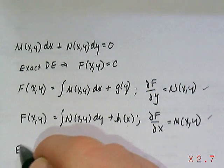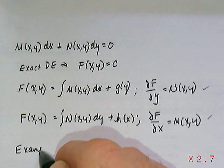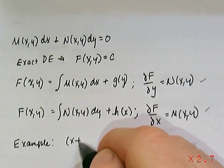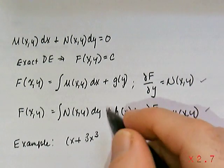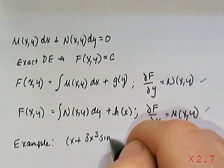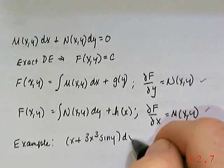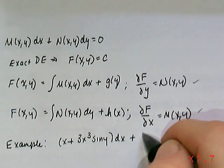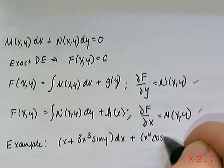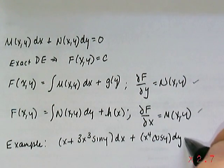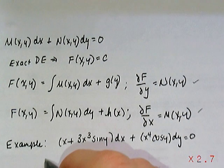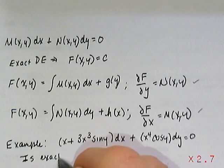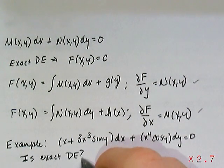So just to recall, let's go back over again to understand whether an example equation is exact or not. Suppose you had (x + 3x³sin y)dx + (x⁴cos y)dy = 0. And we're asking the question, is this exact? Is this an exact differential equation?